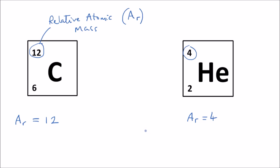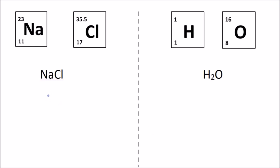So the carbon is three times more massive than a helium atom. When we get a molecule such as sodium chloride, we just add the relative atomic masses to get the relative formula mass, also known as the relative molecular mass.